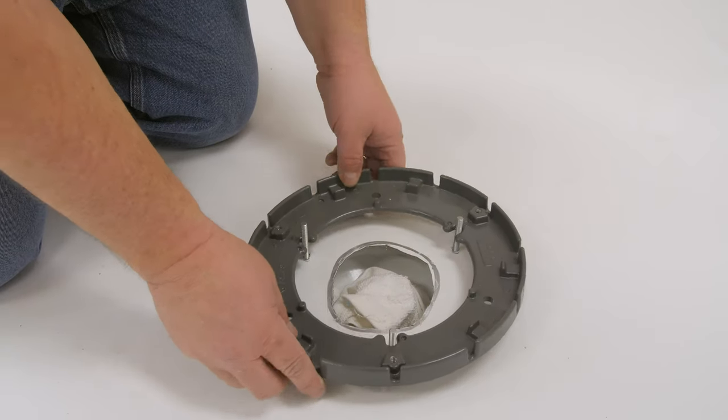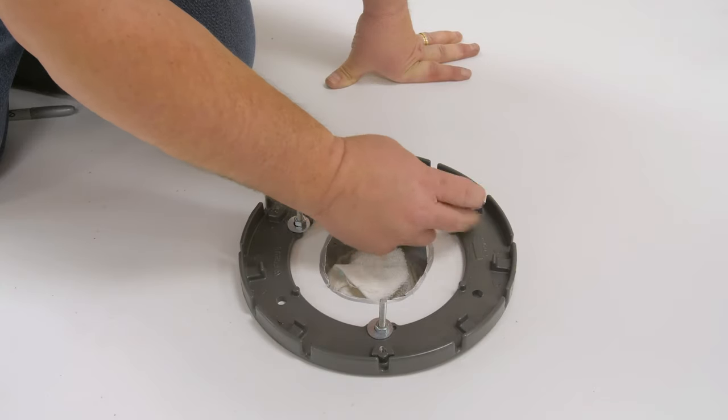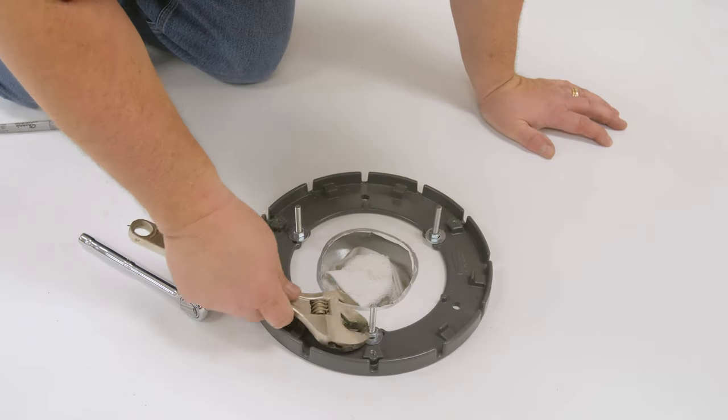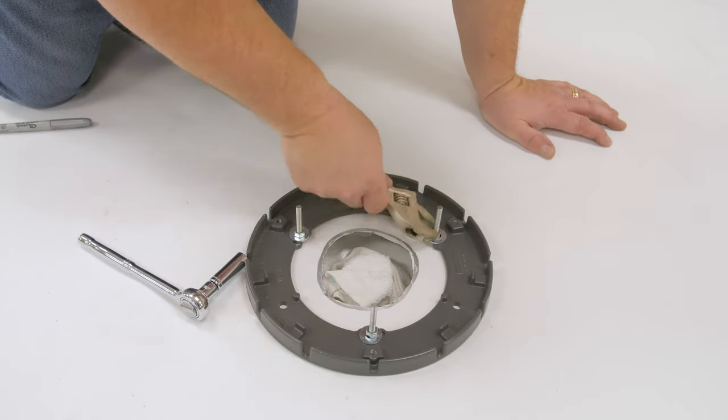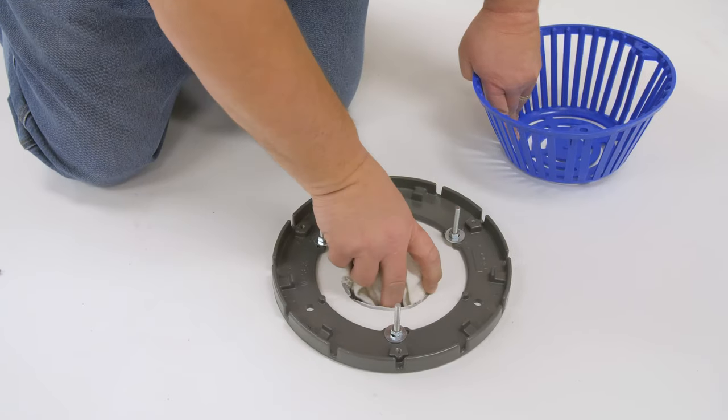Set the clamping ring and install the bolts. Tighten all bolts evenly to provide equal pressure around the bowl. This will cause the water cutoff to squeeze out on both sides of the clamping ring. Install the drain strainer.